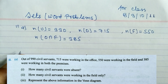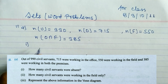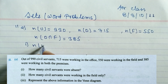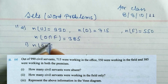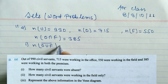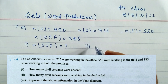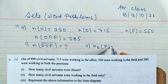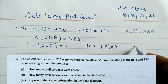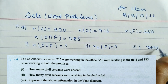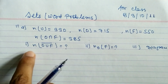In part one, we have to find out how many civil servants were absent — that means (O union F) complement. In part two, we have to find how many civil servants were working in field only — that is 'only F'. And in part three we have to show in a diagram.